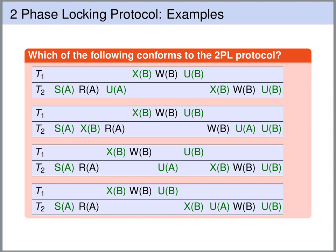Let's look at some example schedules and check whether each adheres to the two-phase locking protocol. You may want to pause the video to check for yourself. The first schedule does not adhere to the two-phase locking protocol because in transaction 2 we have an unlock followed by a lock. The two-phase locking protocol forbids obtaining any lock after a transaction has already unlocked a lock.